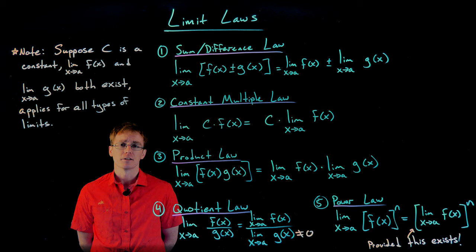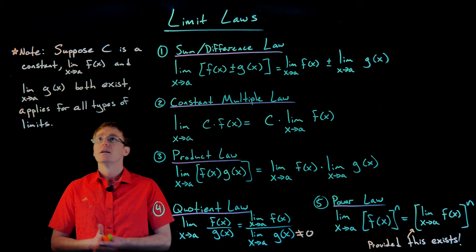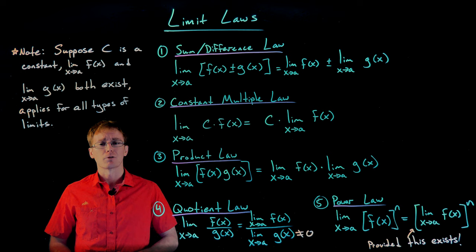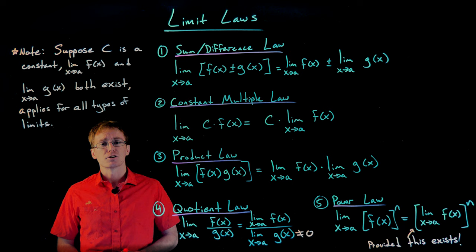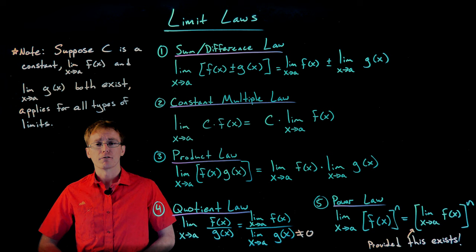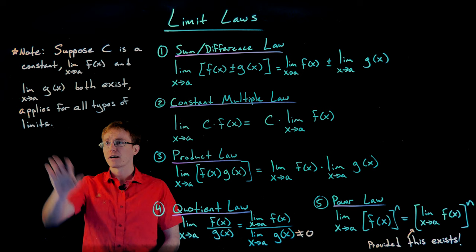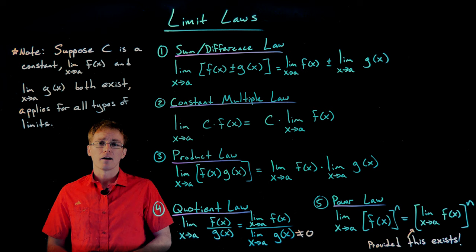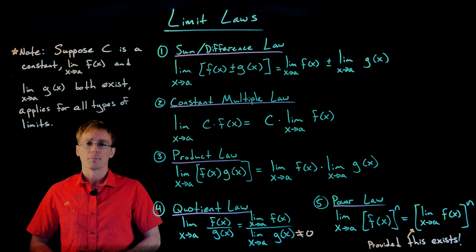A little bit of setup before we start describing these limit laws and how to use them. In the statement of all these limit laws we're going to suppose that C is representing some constant real number. We're also going to suppose that the limit as x approaches a of f and the limit as x approaches a of g both exist as some real finite number. These limit laws are written for two-sided limits but they're going to apply to one-sided limits as well, and eventually when we talk about limits involving infinity they'll apply there too.